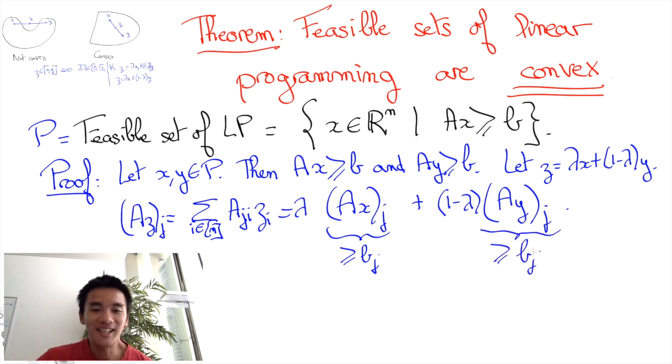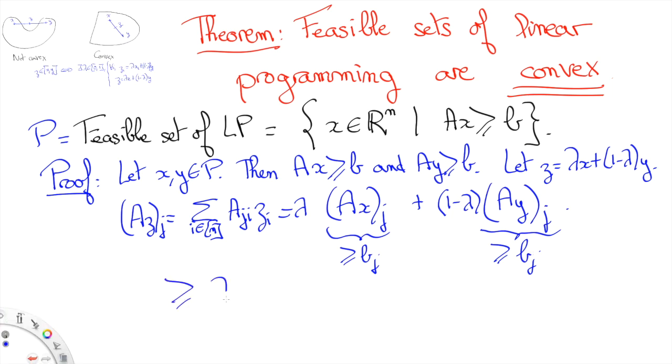Thus we know that (AZ)_j is going to be at least lambda times b_j plus (1 minus lambda) b_j, which is equal to b_j. And thus for all j's we have (AZ)_j which is greater or equal to b_j, which corresponds to saying that AZ is greater or equal to B, which means that Z is in P.